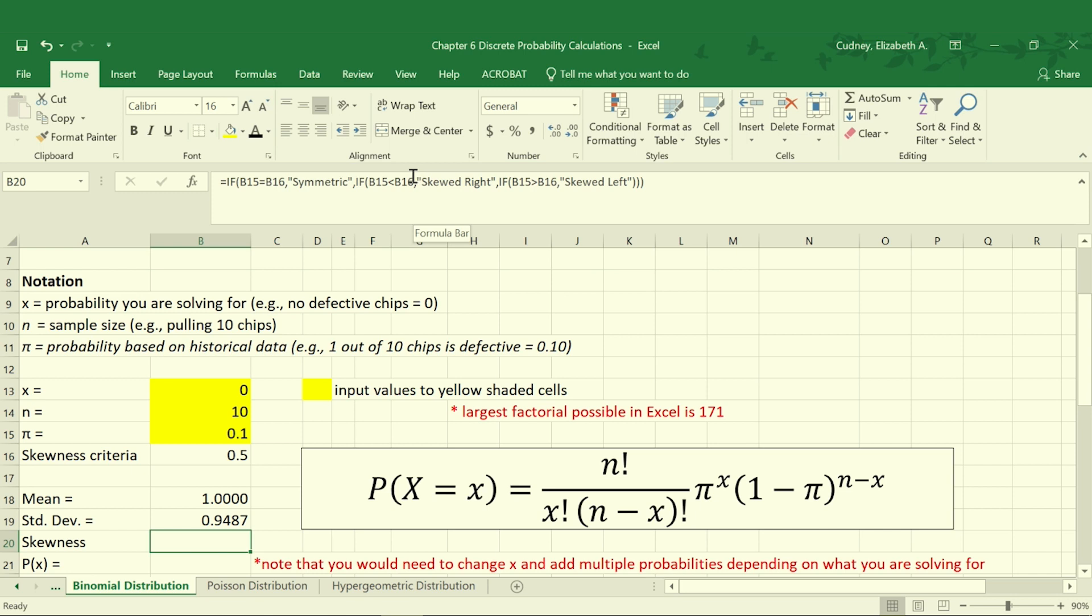So we can also add in logic so we know if our data is also skewed or not skewed. So in this case we can compare our value in our pi value to our skewness criteria which is 0.5 which is the standard. If they're equal then that means our distribution is symmetric. Otherwise it could be skewed right or skewed left depending on the ratios between our skewness and our mean.